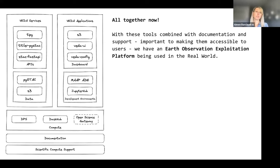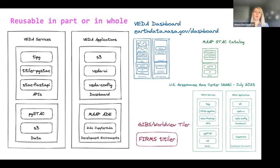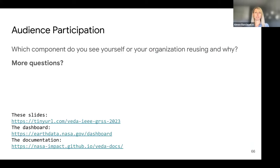Altogether, these form the Earth Observation Exploitation Platform. In addition to all the services we provide, we also want to highlight our documentation and science support to make this a holistic platform accessible to new and existing users. This is reusable in part or in whole. We have the VEDA dashboard, and we've reused components for the Multi-Mission Algorithm Analysis Platform STAC catalog. The GIBS Worldview system has an instance of the dynamic TiTiler for FIRMS data. We're reusing pretty much all of this system for the US Greenhouse Gas Center, which should be released in July 2023.